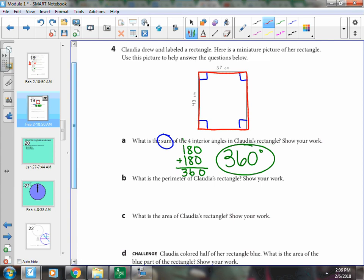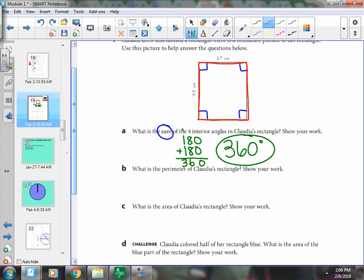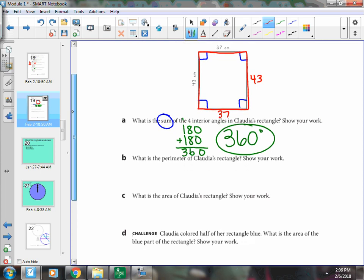Okay, so we need to add the lengths of all the sides together. 43 plus 37 plus 43 plus 34. Make sure the lengths of all four sides, not just the two sides they have labeled. I think I'm going to do 43 plus 37 and then double it.